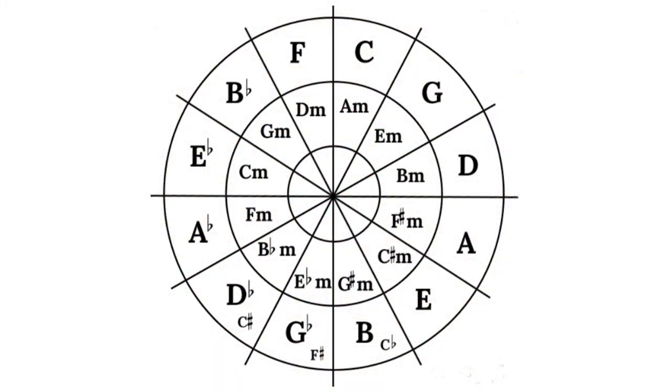This is the circle of fifths diagram. We'll look at the outer ring first. We move around the circle in a clockwise direction and start on C. You can see G is after C if we go clockwise and G is a fifth above C. This means that if we play a scale of C, a major or minor scale, G is the fifth note.